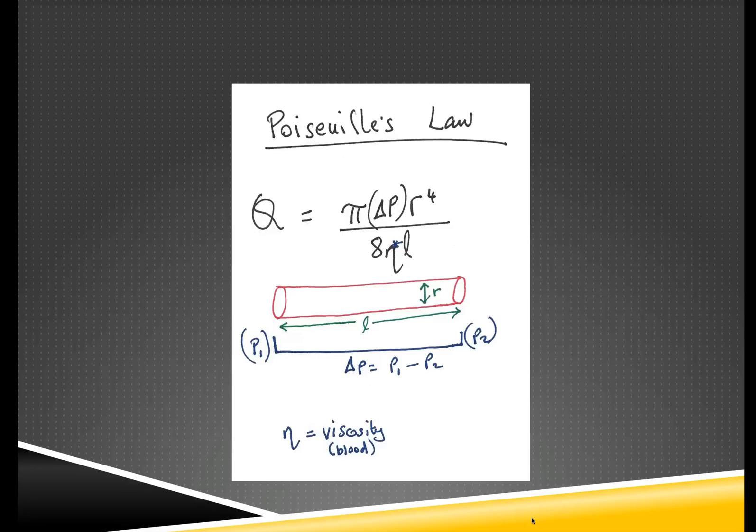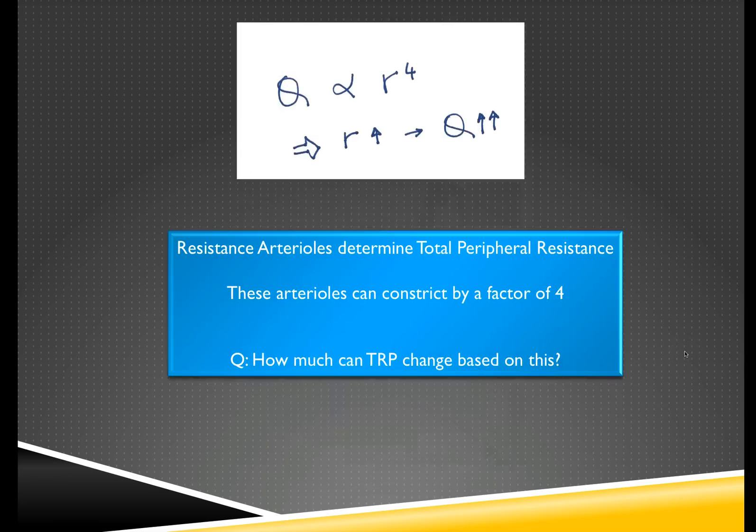This is Poiseuille's law, which essentially puts it all into perspective and allows us to explain flow within a tube. It makes many assumptions but it's simply thought of as: flow is equal to π, because we're assuming this is a perfect sphere, times the change in pressure (P1 minus P2), and relates to the fourth power of the radius divided by a constant of 8 and the viscosity, multiplied by the length. Therefore flow is proportional to the fourth power of the radius.